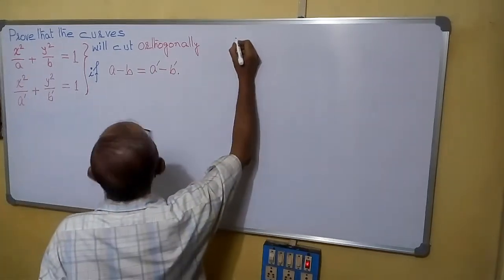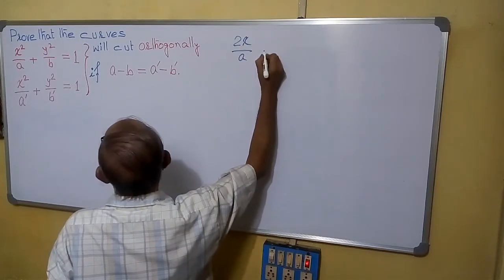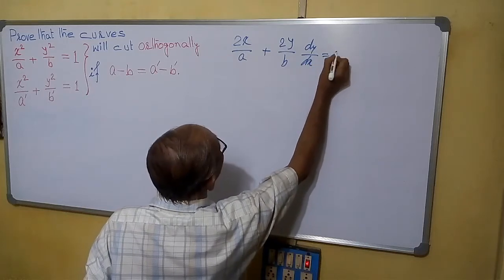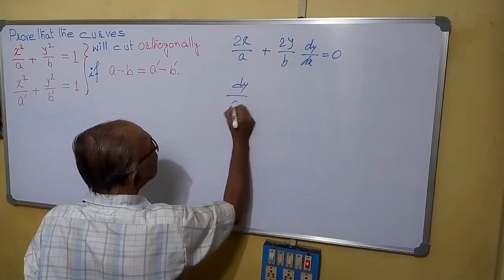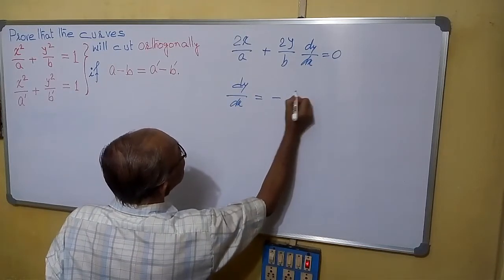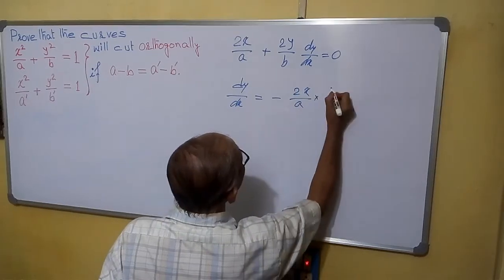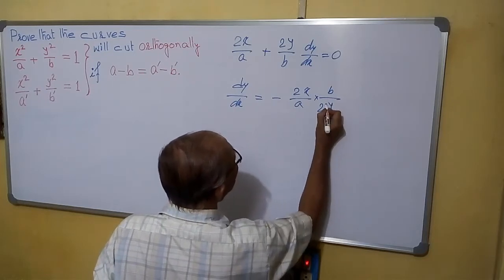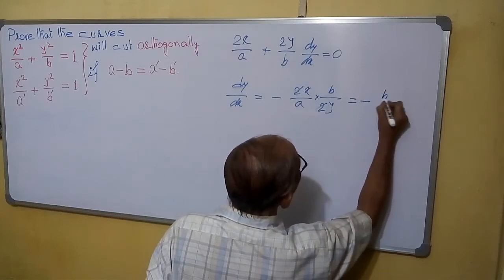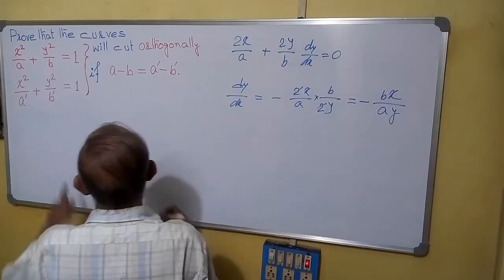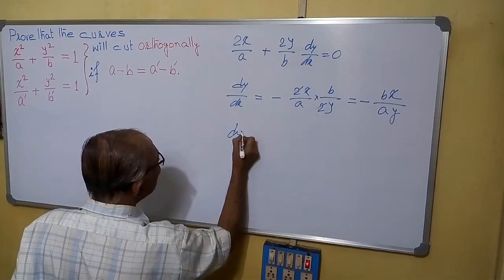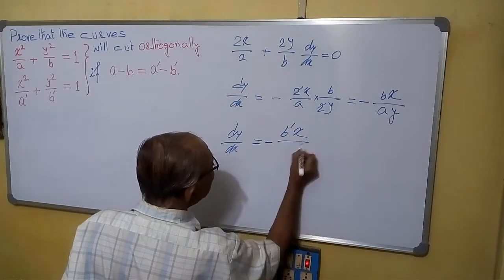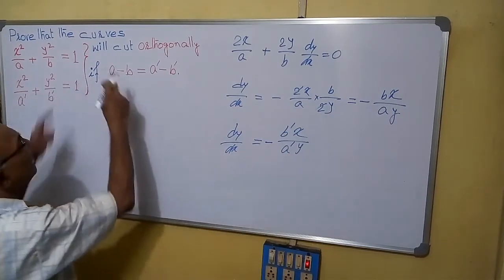For the slope of the first curve, we have 2x by A plus 2y by B times dy/dx equals to 0, or dy/dx equals to minus Bx by Ay. Similarly, for the second curve we can write dy/dx equals to minus B dash x by A dash y.